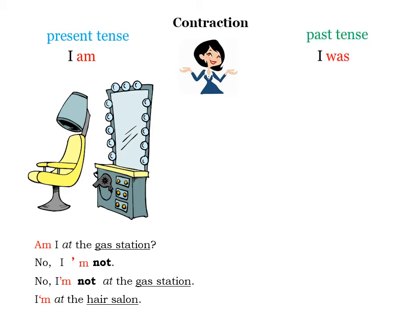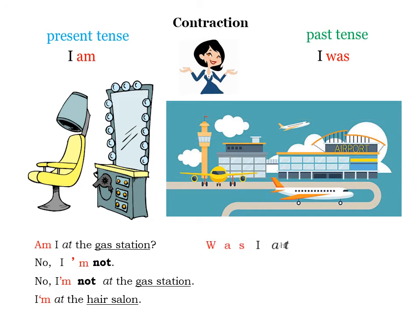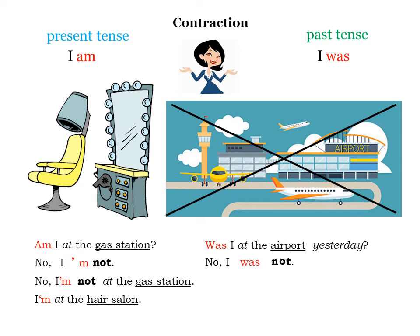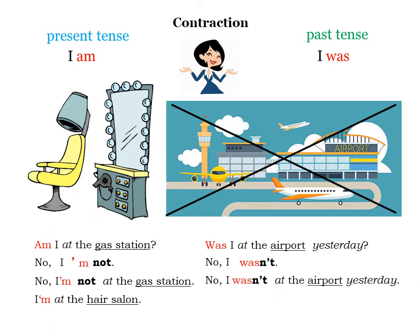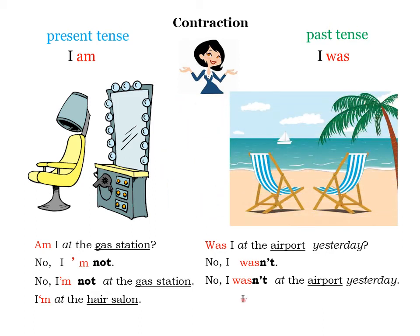Past tense: I was. Was I at the airport yesterday? No, I was not. To make a contraction, you change the O to an apostrophe and slide them together: No, I wasn't. In a sentence: No, I wasn't at the airport yesterday.